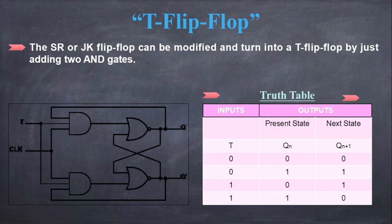Below, the SR or JK flip-flop can be modified and turned into a T flip-flop by just adding two AND gates.